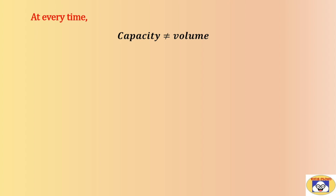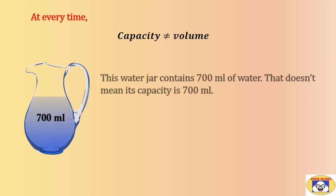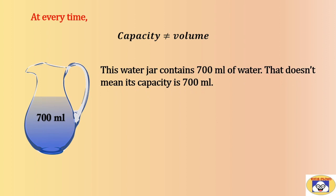But every time the fluid inside the container doesn't show the capacity. In other words, at every time capacity is not equal to volume. Here is one example: this water jar contains 700 ml of water. That doesn't mean its capacity is 700 ml.